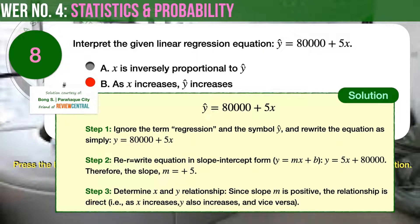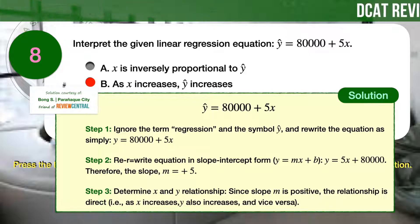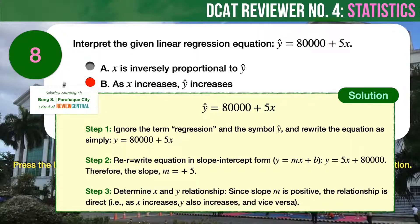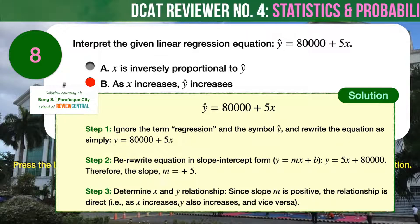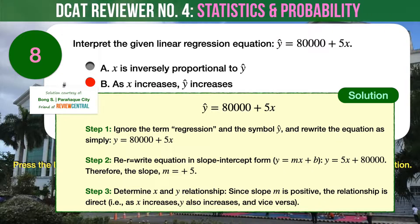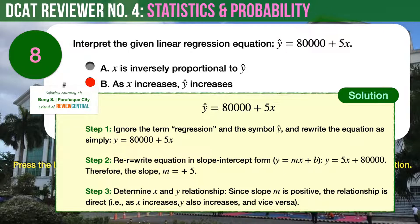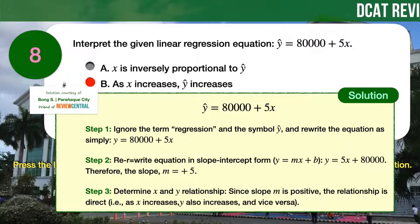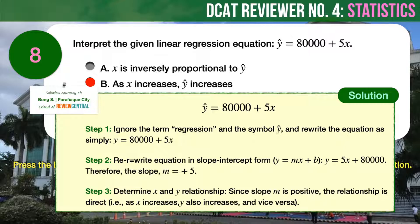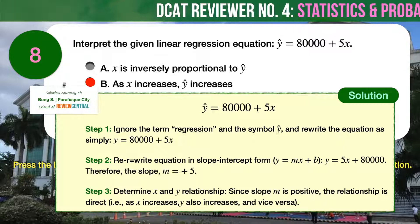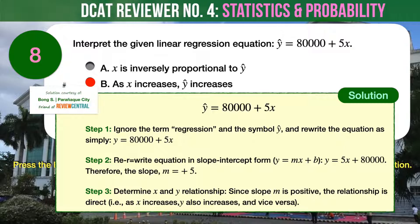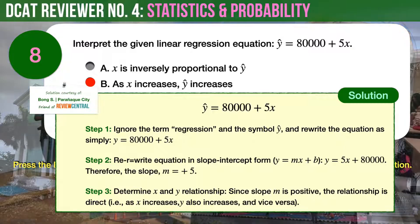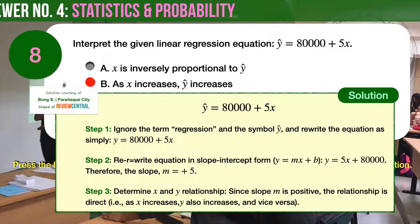The more conclusive way to establish this is to determine if the slope of the line is positive or negative. Using the slope-intercept form y = mx + b, where m is the slope and b is the y-intercept, we rewrite the equation as y = 5x + 80,000. From here, the slope is quickly found to be positive 5 — not negative 5. Since the slope is positive, the relationship of the two variables is direct: as x increases, y also increases.